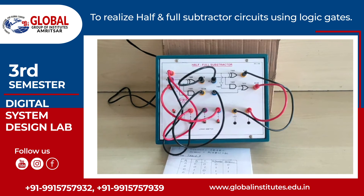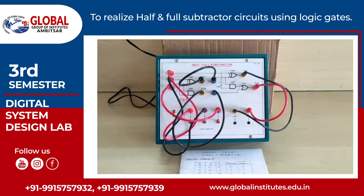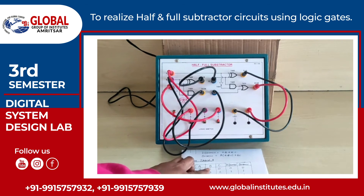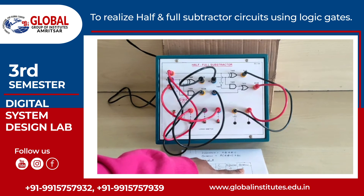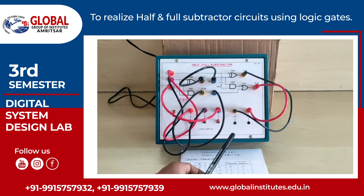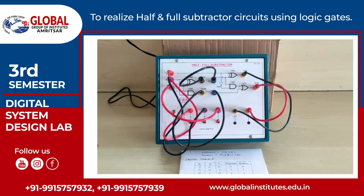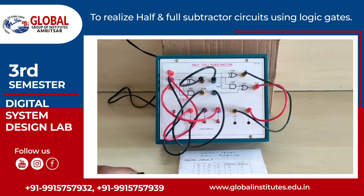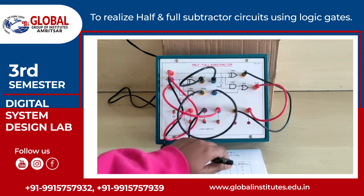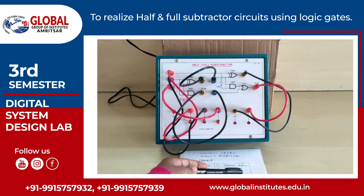Now we will verify the truth table of the full subtractor. First, inputs A, B, and C are all at low level — A is 0, B is 0, and C is 0. The difference will be 0 and borrow will be 0. Both LEDs are not glowing, showing that outputs are at low level. Next, A is 0, B is 0, and C is at 1. The difference is 1 and borrow is 1.